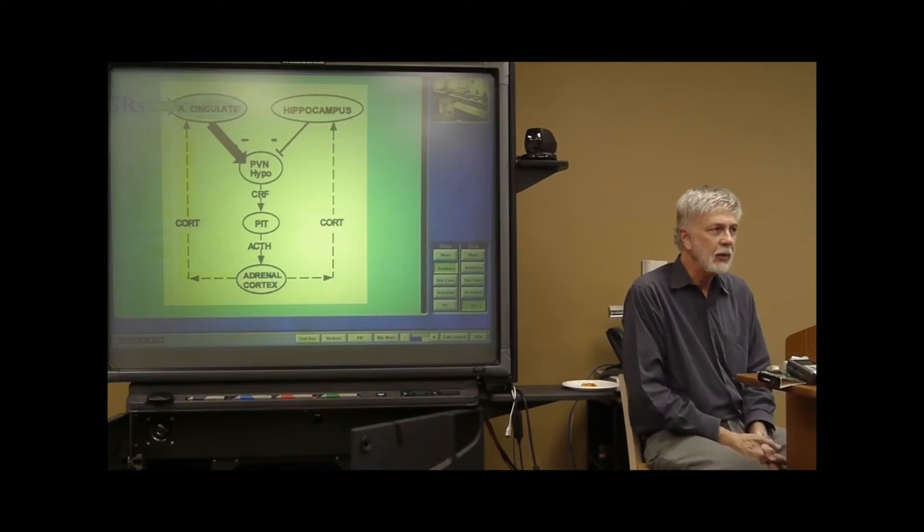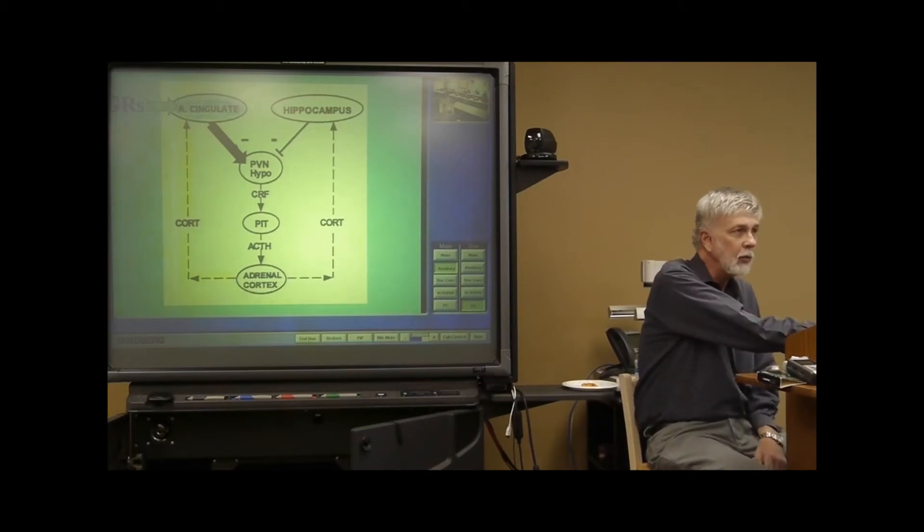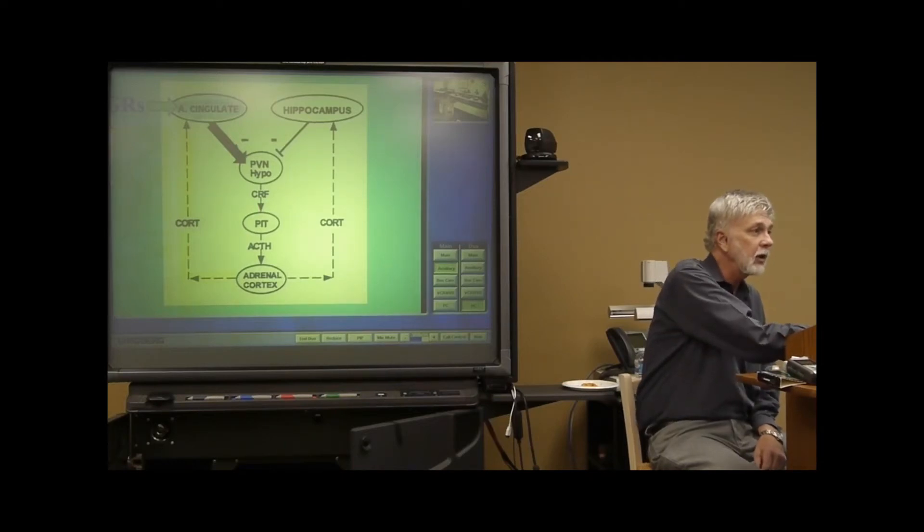It's the other brain structure that is just loaded with GRs. So first off, under normal circumstances, not hypercortisolemia, but normal circumstances, in a fashion that's somewhat similar to what we saw with the hippocampus, when you have release of cortisol, it's going to get up in the brain, and it's going to activate the anterior cingulate big time. And it, too, then regulates the HPA axis.